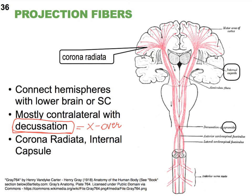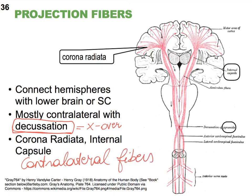The crossing over of fibers is called decussation, and fibers that cross over are said to be contralateral fibers. So only if they're crossing over are they called contralateral. I'll introduce you to the other term — for fibers that do not cross over — later on.